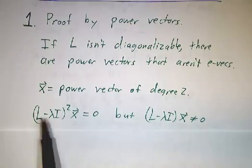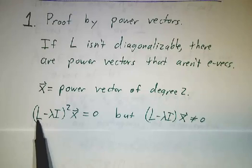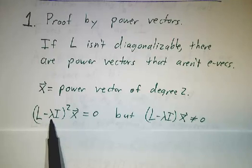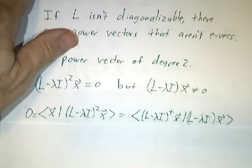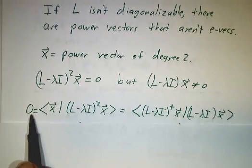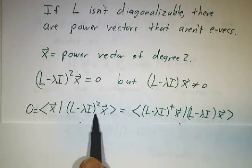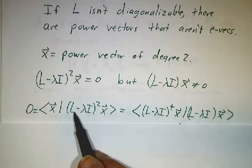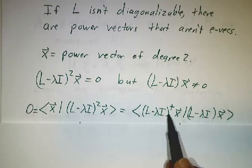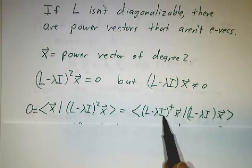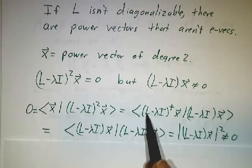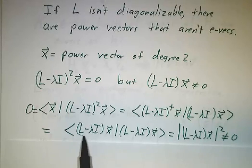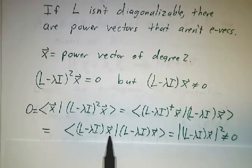On the other hand, the adjoint of (L minus λ times the identity) is (L† minus λ̄ times the identity). And L† is L and λ̄ is λ because it has real eigenvalues. So we can look at 0 as the inner product — this vector is 0, so you dot x into it and still get 0. But now you can take one of the (L minus λI) factors and put it on the other side, daggering it. And then L† is L and (λI)† is λI because λ is real. So we have the inner product of (L minus λI)x with itself.